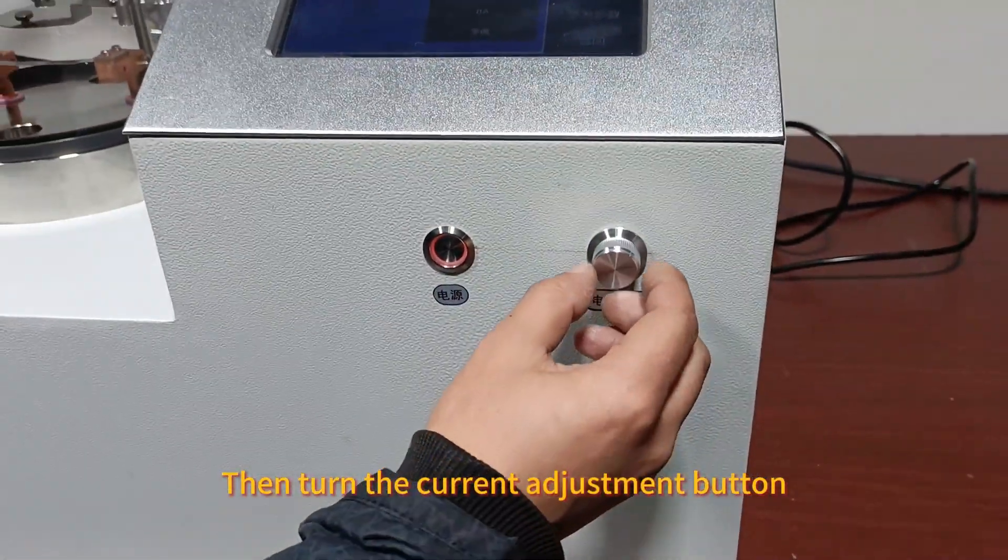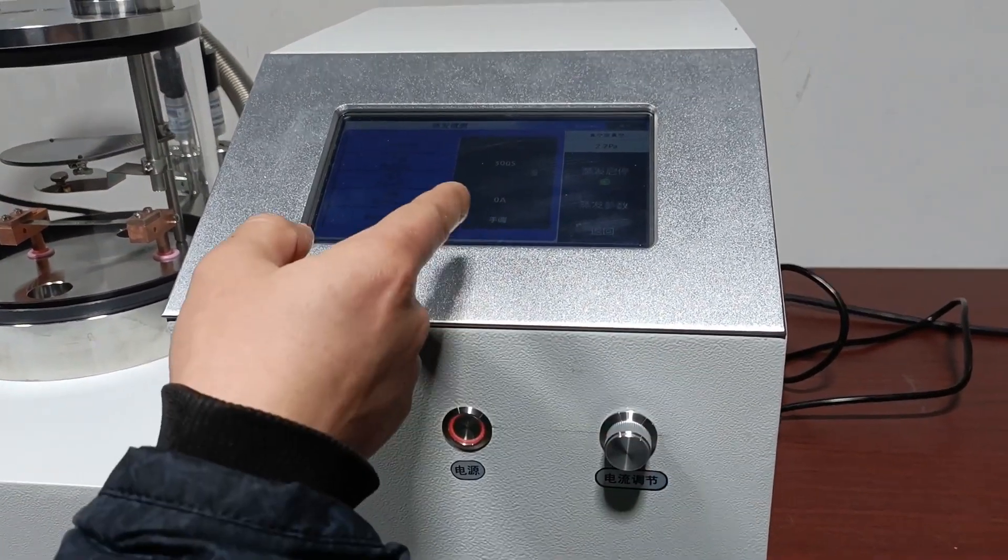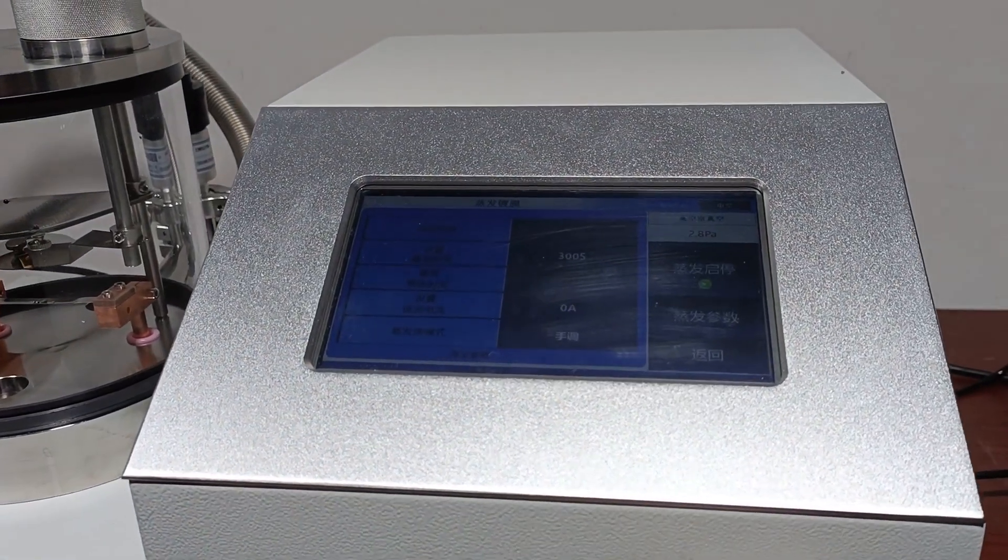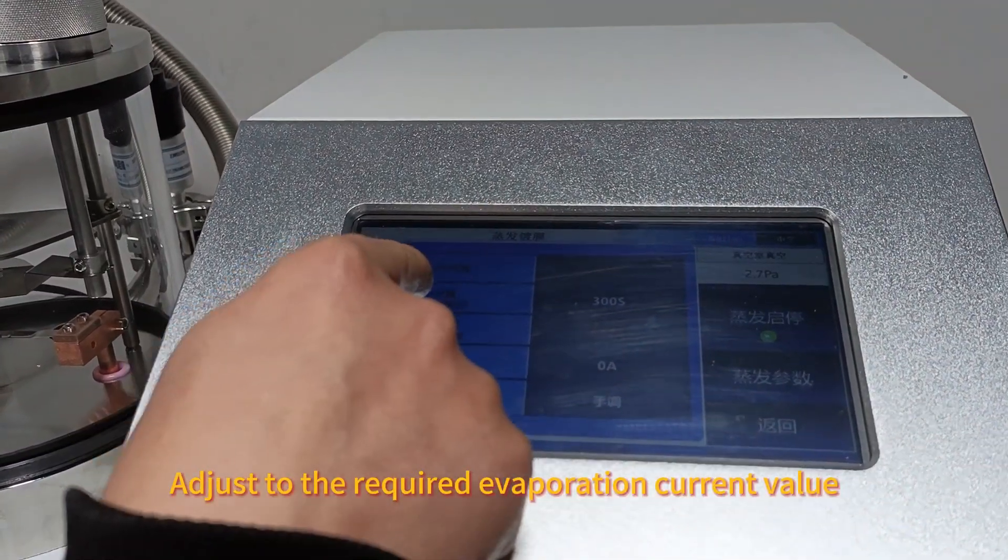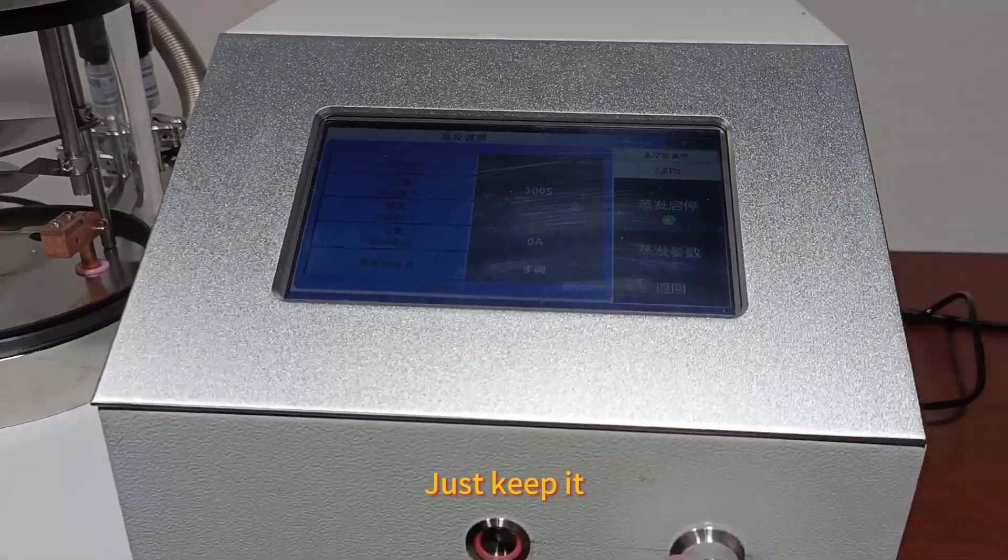Then turn the current adjustment button and adjust to the required evaporation current value. Just keep it.